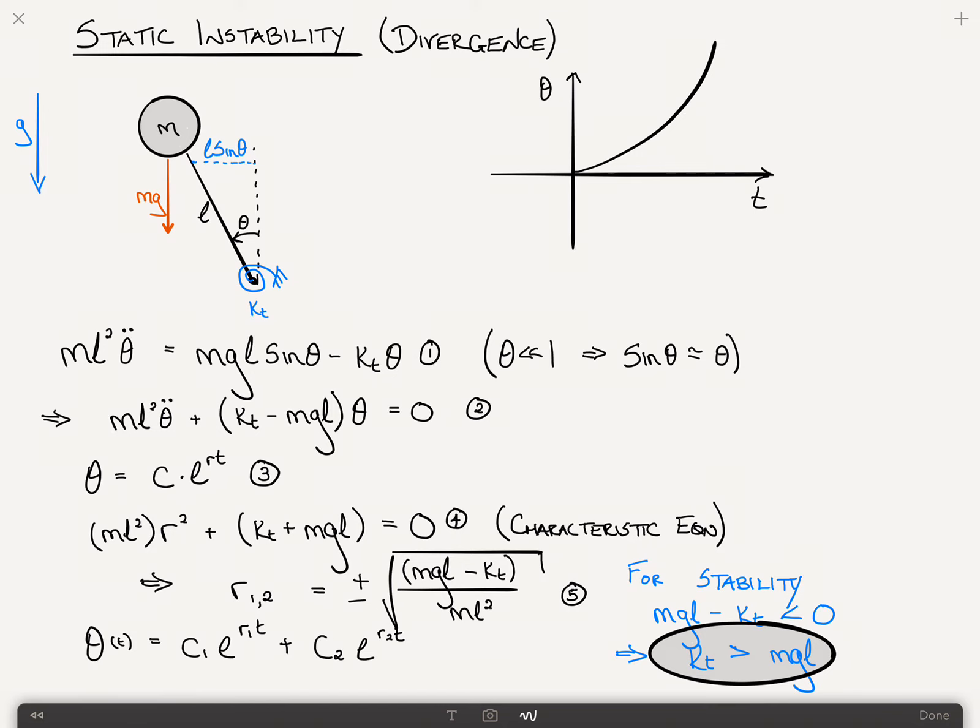When that happens, and this is when kt is less than m g l, it becomes negative. Then what happens is you have two real roots, one of which is positive. And because of that positive root, you get exponential growth. And this is the condition known as divergence. When a system diverges, the displacements grow exponentially. And I'm stressing that because it's different to what happens in the case of dynamic instability, as we'll see in a future video, where the displacement and dynamic instability grows linearly.